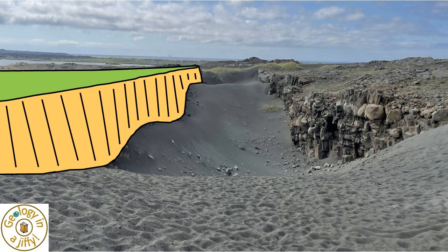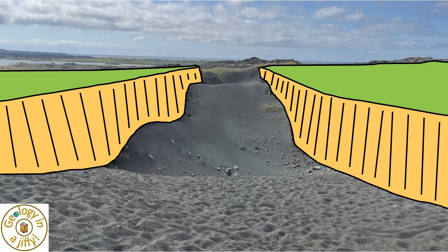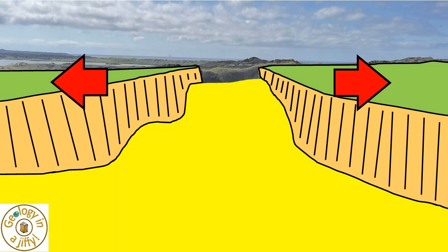The graben is very clear to see, with the Eurasian plate to the south and the American plate to the north side, each plate moving apart, extending the crust, forming the central graben which we can see has dropped downwards.